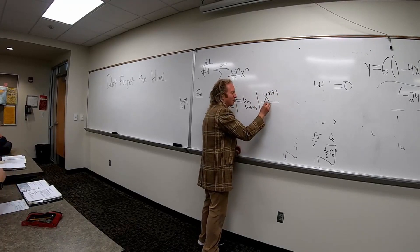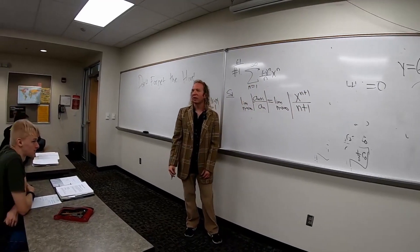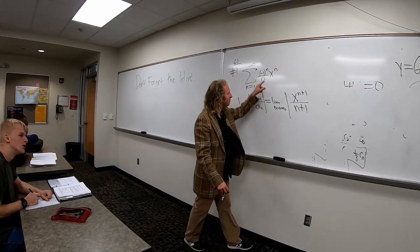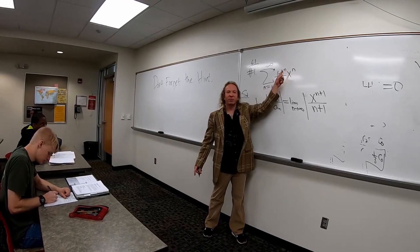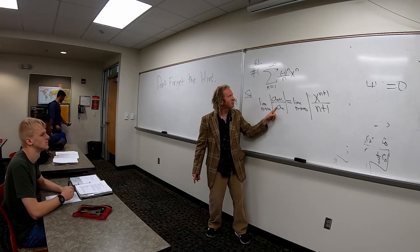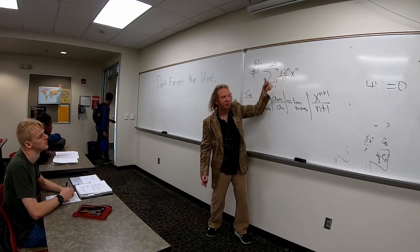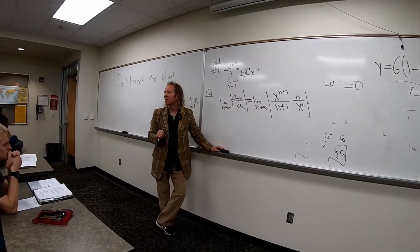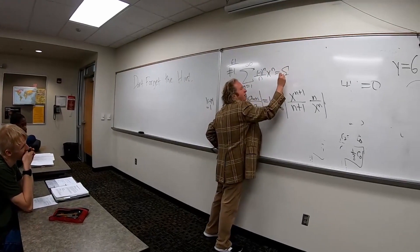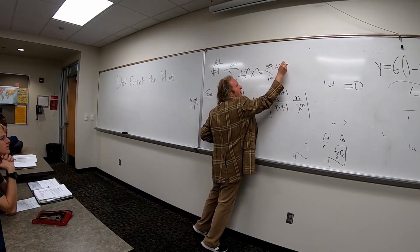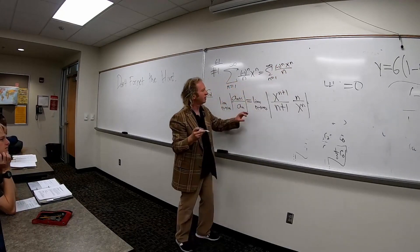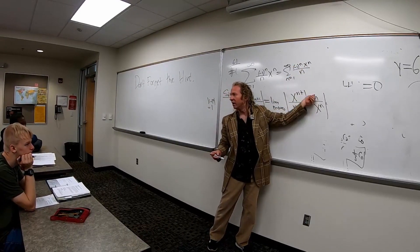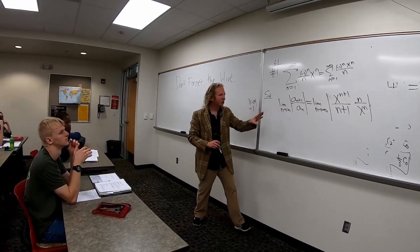So basically we have x to the n plus 1. So replace all of the n's with n plus 1's, right? And then we're dividing by a sub n, so you just multiply by the reciprocal. So it'd be n over x to the n. Let me pause here because I skipped some steps. So then plug in n plus 1, you get this. And then when you divide, you flip it. And the negatives go away because you're taking the absolute value. Any questions?